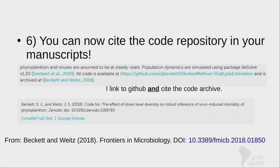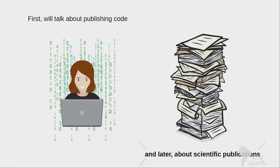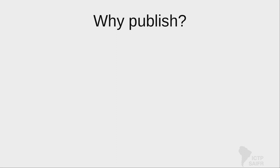Now I want to think about scientific publications more generally — not just the code, more the manuscript. Why publish? It's about getting methods and results out into the world, sharing them with peers, and moving science fields forward. But it's also become a kind of currency within science — it's good for a scientist to have a certain number of articles out. This can be attributed to the fact that you can count the number of articles and citations people have, which comes together into a gamification system used for career advancement — which I don't necessarily think is a good thing, because it doesn't reflect how much effort it took to produce that work.